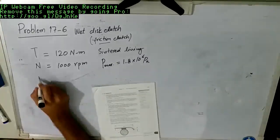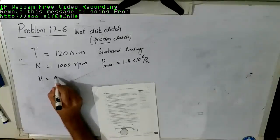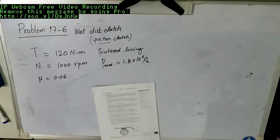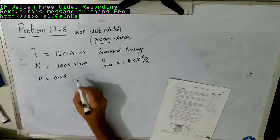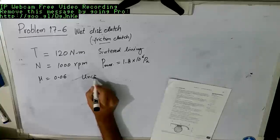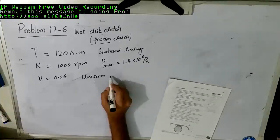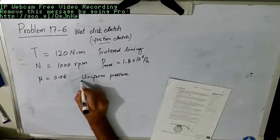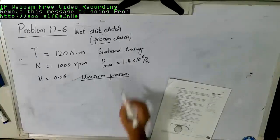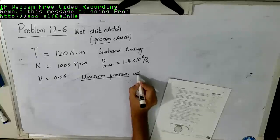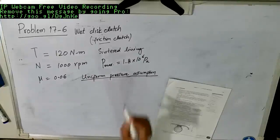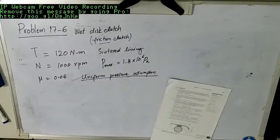This lining has a maximum pressure of 1.8 into 10 to raise power 6 Pascals. The coefficient of friction is also given which is mu is equal to 0.06. Now in problem 17-6 it says that you should assume the condition of uniform pressure distribution.